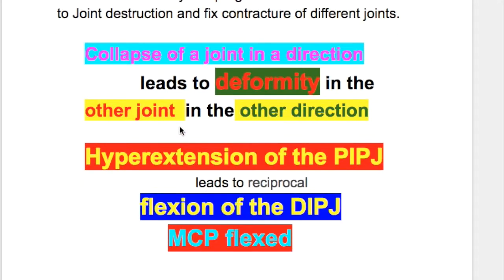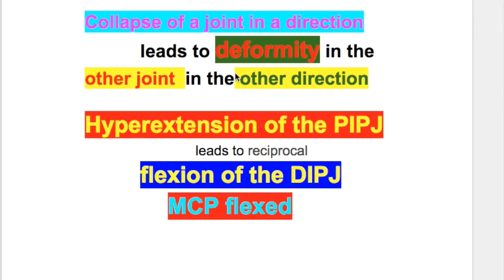An important point to note is that collapse of a joint in one direction leads to deformity in the other joints in the other direction. So a deformity in one joint will lead to the opposite deformity in the proximal and distal joints.